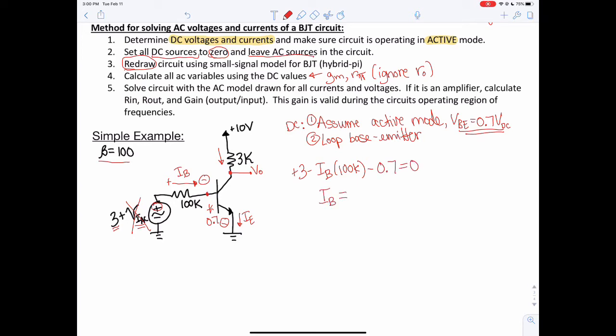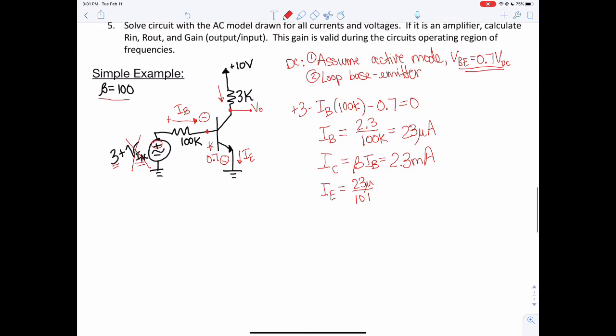I only have one unknown here. So IB is going to be 2.3 over 100K for a value of 23 microamps. And then we can get IC, which is beta IB, so 100 times that to give me a value of 2.3 milliamps. And IE, I can also get if I want, which is going to be 23 micro over 101 beta plus 1. So now we know the currents, we can find the voltages. We see here automatically VE is located here, VC is also the same value as VO, and VB is located here.